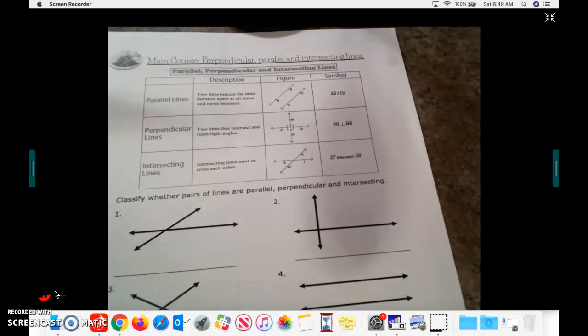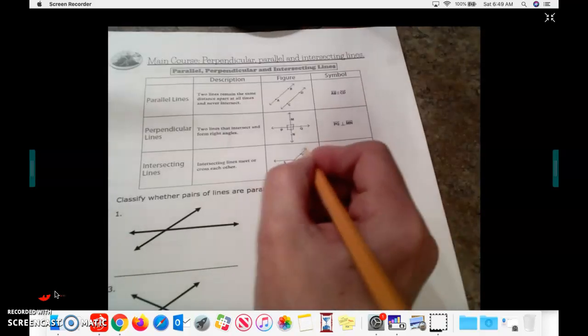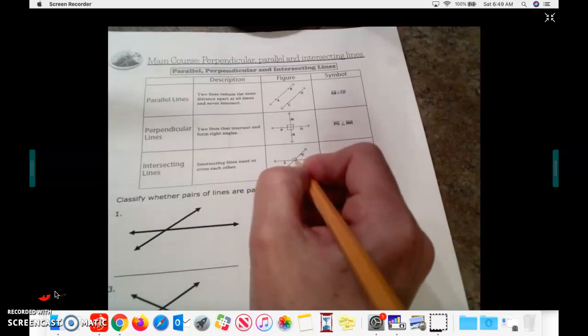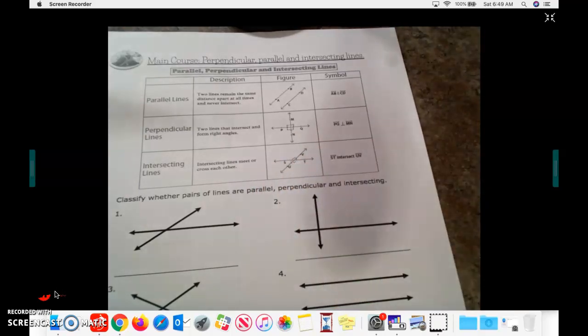And then finally, intersecting lines are lines that cross each other, but they don't form a right angle. So, yes, these lines cross, and yes, there's some angles, but they're not 90 degrees.